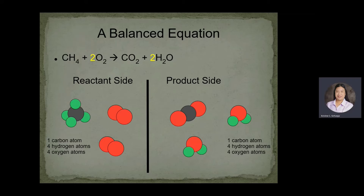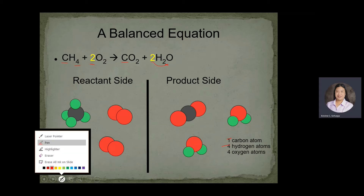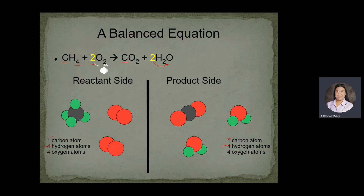To balance the equation, we need to write coefficients. We write a two before water. Now checking: carbon — one on each side, balanced. Hydrogen — four in the reactant, and two times two equals four in the product, balanced. Oxygen — two times two equals four in the reactant, and two plus two times one equals four in the product, balanced. The coefficients used to balance this equation are one, two, one, and two.